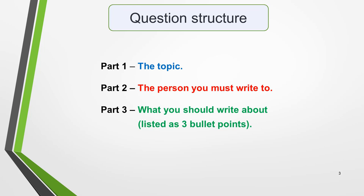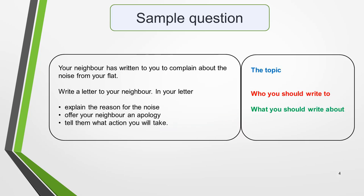First, the structure of the question. All questions for IELTS letters have the same structure and they're made up of three parts. Part one is the topic, part two the person you must write to, and part three what you should write about, listed as three bullet points. Here's a sample question for a letter of apology with the three parts illustrated.